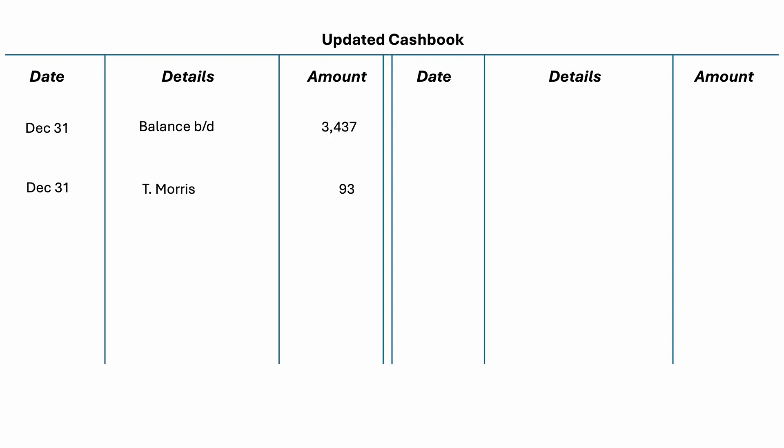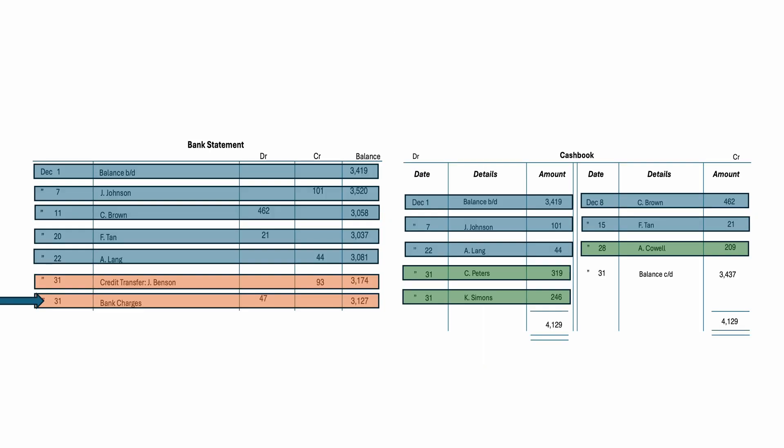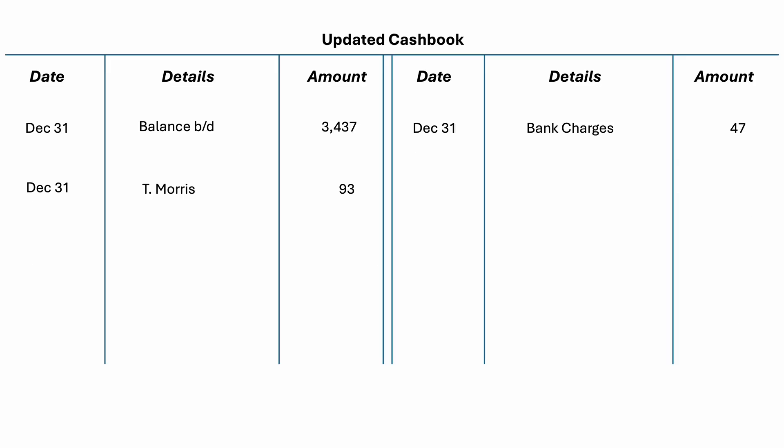The next transaction is bank charges. On the bank statement, the amount for bank charges is on the debit side. This means in the updated cash book, bank charges go to the credit side. It is important to note that bank charges are charged by the bank and are an expense for the business. All transactions that were on the bank statement only have now been updated into the cash book.